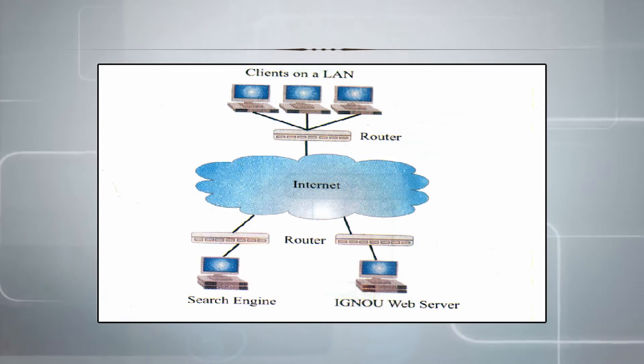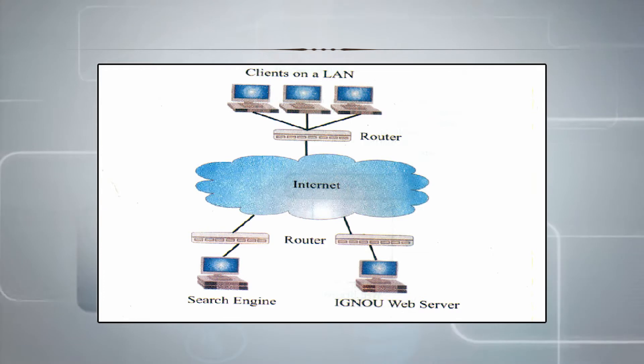Internet is a global connection of networks, but how are these computers connected? Internet is basically built up of multiple smaller networks called subnets. Each computer system on a subnet must have a unique IP address. All these subnets are connected together with network devices called routers, and each subnet may also contain its own subnets. The image shows the top level view of the structure of internet as a cloud of many routers connected to each other.